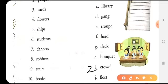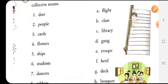Then we have cards. The collective noun for it is deck. The collective noun for flowers is bouquet. Ships, it is fleet. Students. Now let's see where this answer is. For students, we have class of students.